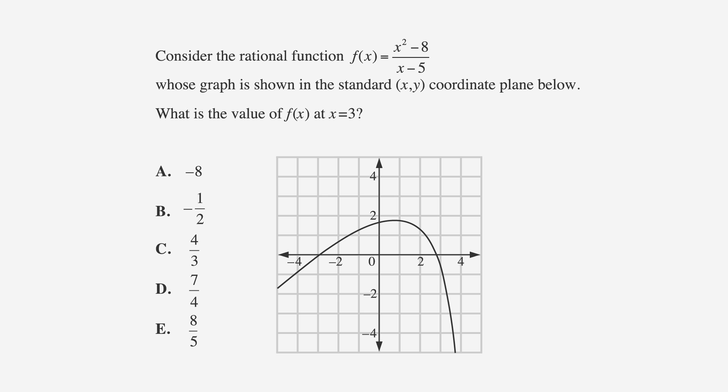Consider the rational function f(x) equals x squared minus 8 over x minus 5 whose graph is shown in the standard xy coordinate plane below. What is the value of f(x) at x equals 3? a is negative 8, b is negative one half, c is 4 over 3, d is 7 over 4, and e is 8 over 5.